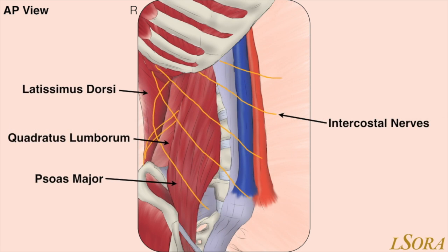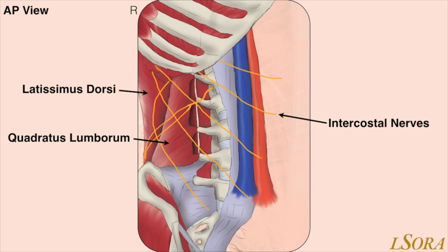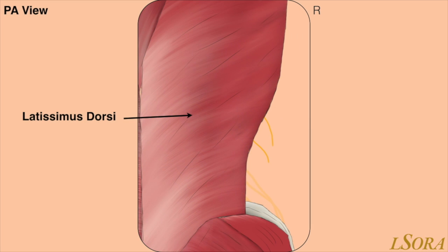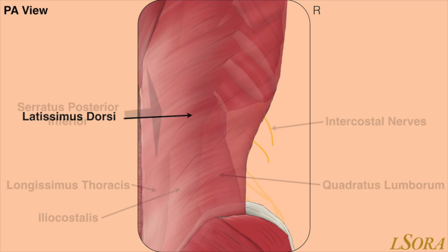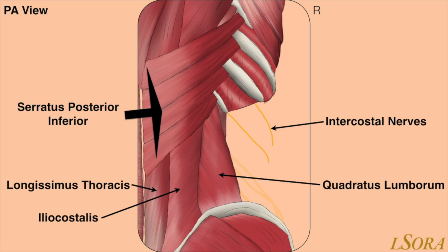Removing the anterolateral abdominal wall muscles, we can see how their posterior relations communicate with latissimus dorsi, quadratus lumborum, and psoas major. By removing psoas major, you can appreciate the potential path of local anaesthetic to ascend to the paravertebral space. From this posterior lateral view from the right-hand side, you can see the relationship between latissimus dorsi, erector spinae, and the quadratus lumborum muscles.